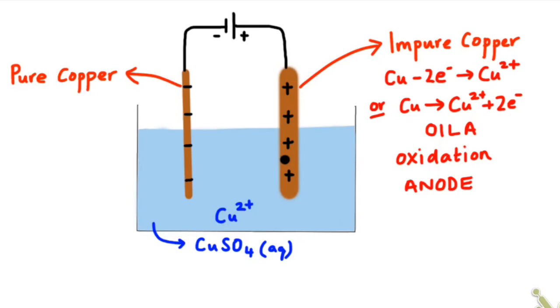Let's focus on one particular copper atom on that impure copper electrode. I've denoted that with a little black circle. That copper atom will lose two electrons and those two electrons will be drawn up by the battery. And as it loses two electrons, the copper atom becomes a Cu2+ ion, which then goes into solution.